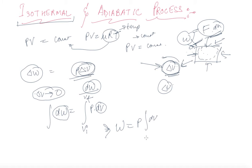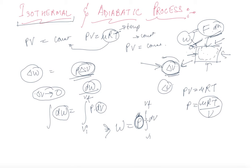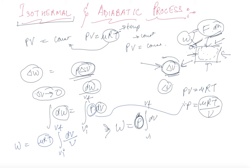Now P is also a variable, but it can be converted. Since PV = μRT, P is nothing but μRT/V. Substituting the value of P from the ideal gas equation, we have W = ∫(μRT/V) dV from V_initial to V_final.